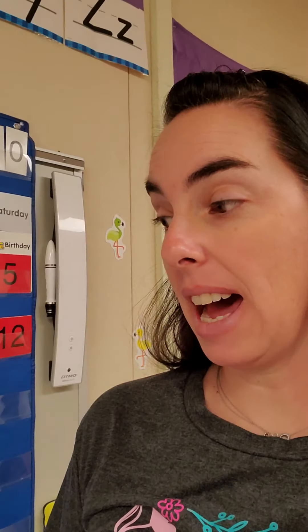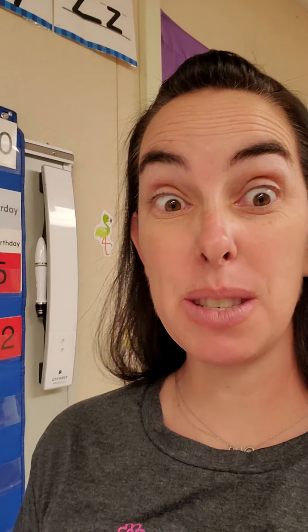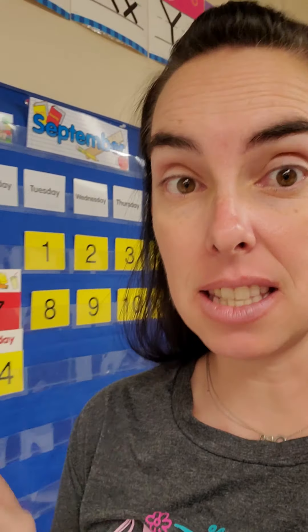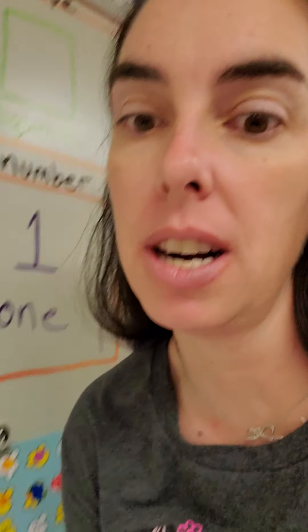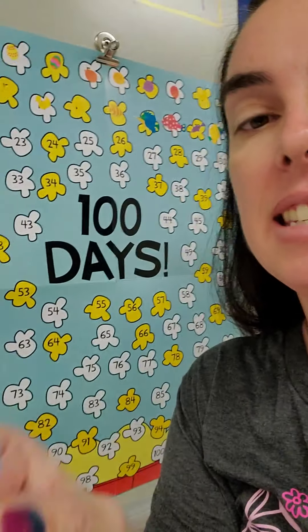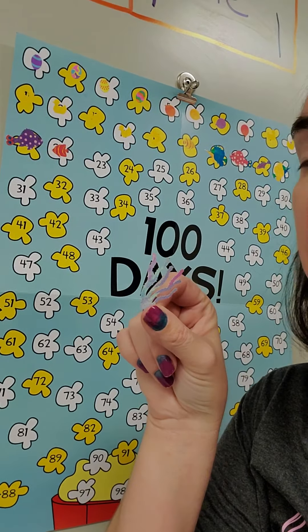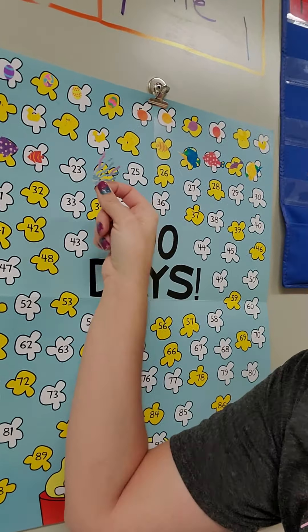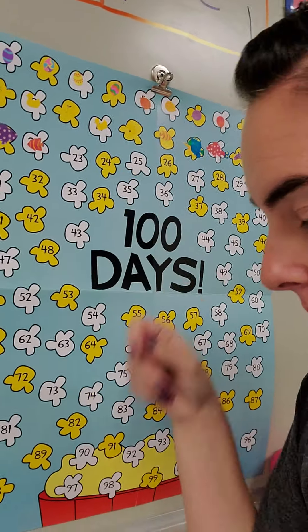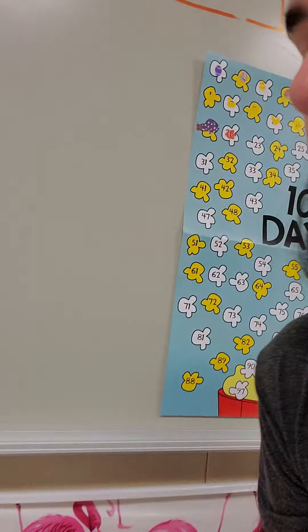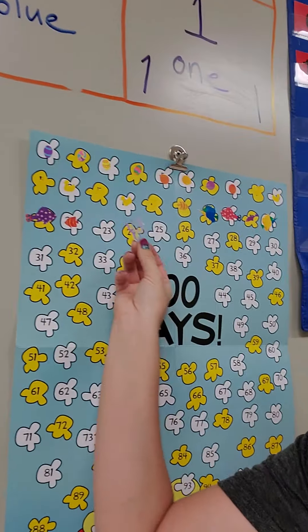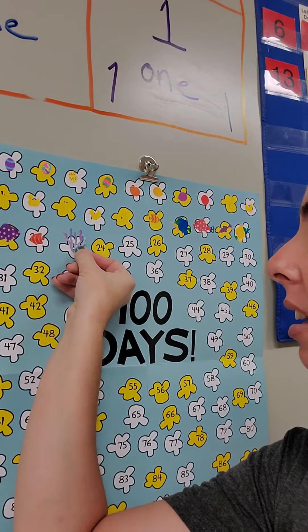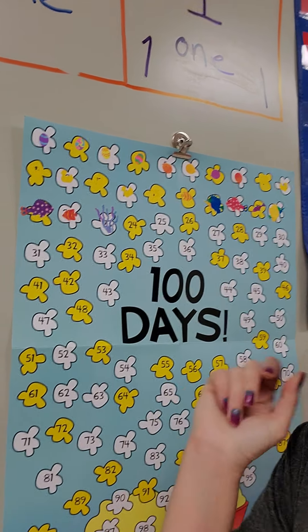You know what that means — we've been in school 23 days. So let's go ahead and put our sticker on. Today I have plants. That's pretty cool, huh? So let's go ahead and put it on day 23, just like that.